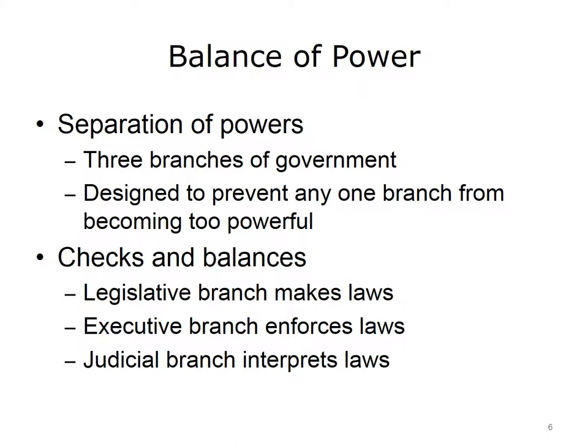Each branch has separate and independent areas of responsibility, which is one way the U.S. Constitution ensures that no single branch becomes too powerful. Another way of balancing power is the concept of checks and balances. For example, the president can veto an act of Congress, but Congress can override the veto with a two-thirds majority vote. Another example is that a court can invalidate a statute or regulation that it finds to be outside the constitutional authority of one of the other government branches.